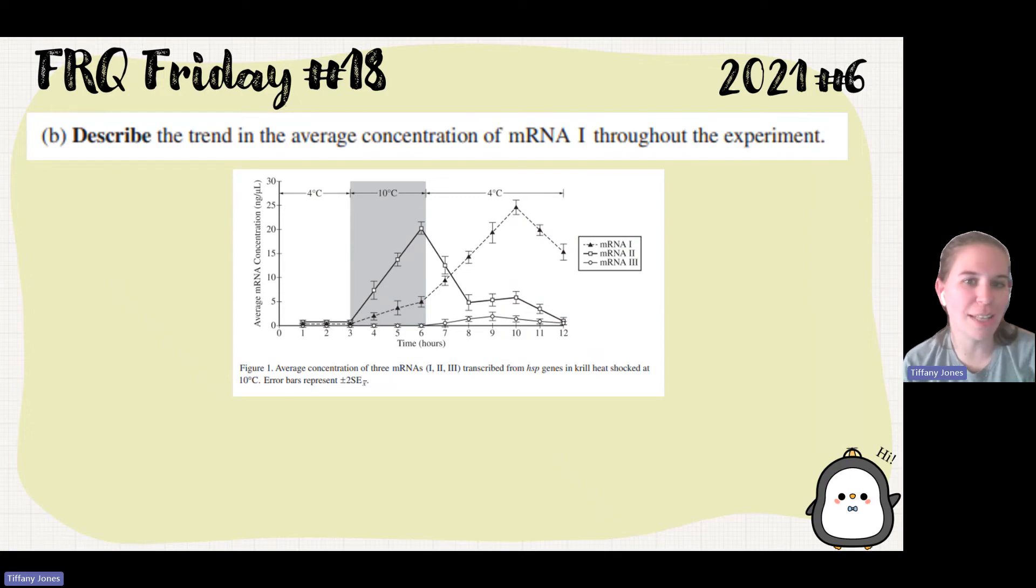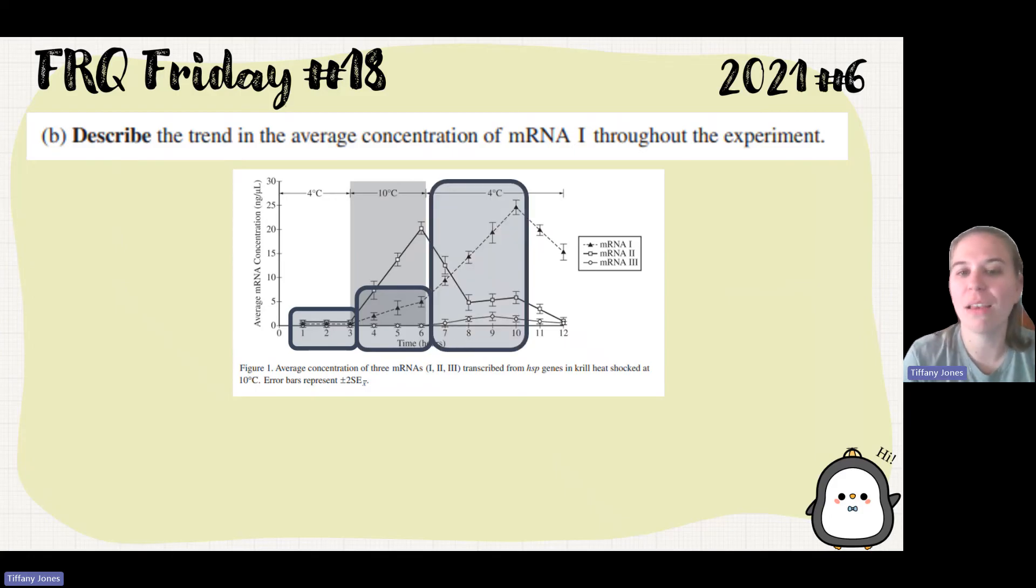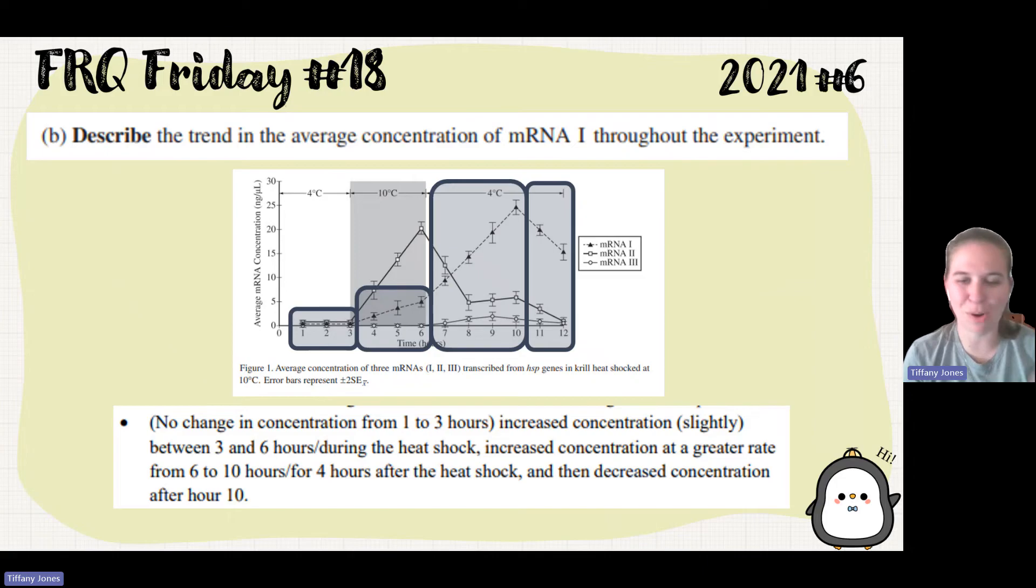Part B says to describe the trend in the average concentration of 1 throughout the experiment. So here we see that 1 kind of stays level. There's no change for the first three hours. Then from hours 3 to 6, so during that heat shock, we see there is a slight increase of the mRNA 1. And then we see that there is another slight increase, a more gradual increase going from hours 6 to hours 10. And then after 10 hours, we see that it decreases. And so the scoring guidelines say increased concentration slightly between hours 3 and 6 during the heat shock. There's an increased concentration at a greater rate from 6 to 10 or 4 hours after heat shock. And then decreased concentration after hour 10.